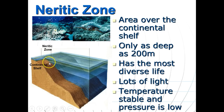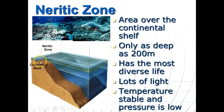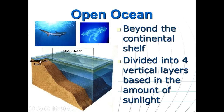After the intertidal zone, from there to the very edge of the continental shelf before the drop-off is the neuritic zone. It extends out to the edge of the continental shelf and is only about 200 meters deep. This is actually the largest and most diverse area of life in the ocean — there's lots of sunlight reaching near the bottom, temperatures are stable, pressure is relatively low, and you'll find coral reefs and kelp forests here.